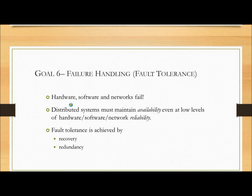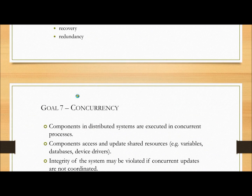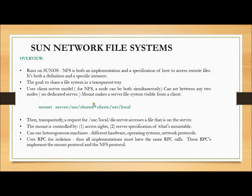Failure tolerance, also called fault tolerance: distributed systems must be available at the time of hardware, software, or network failure. Concurrency: a distributed system component should have the ability to access and update shared server resources. These are the design characteristics and goals of the distributed file system.